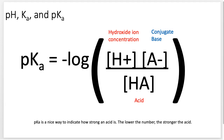Just like pH, the lower the pKa number, the more acidic it is. The smaller the pKa, the stronger the acid. So pKa and pH match up in that sense. Hopefully that's pretty straightforward.